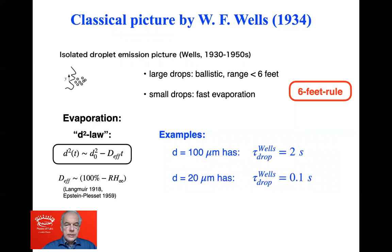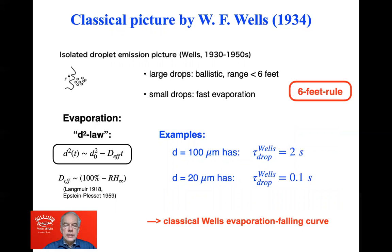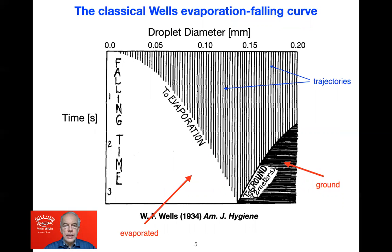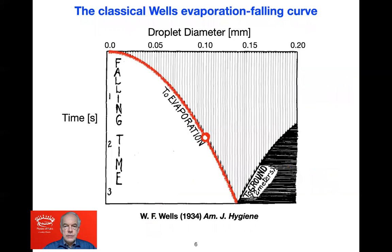The D-squared law states that the square of the diameter decreases linearly with time. For example, for a 10 micrometer droplet, the lifetime according to Wells is two seconds, whereas for a 20 micron droplet, the lifetime is 0.1 seconds. This leads to the classical Wells evaporation-falling curve, shown here: on the horizontal axis is the droplet diameter; large droplets on the right fall to the ground, while small droplets on the left evaporate.